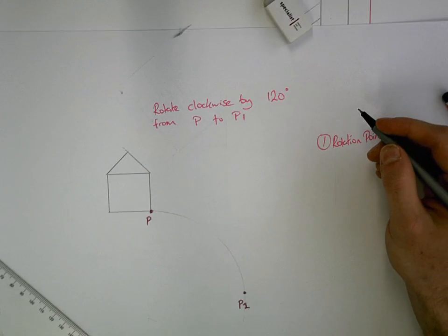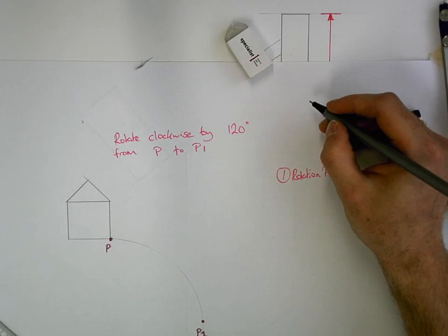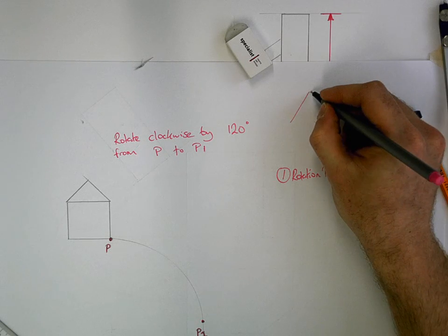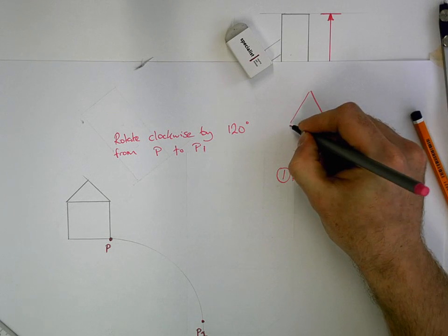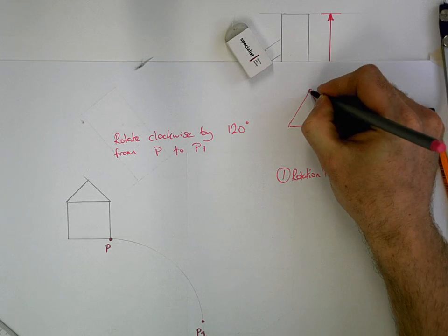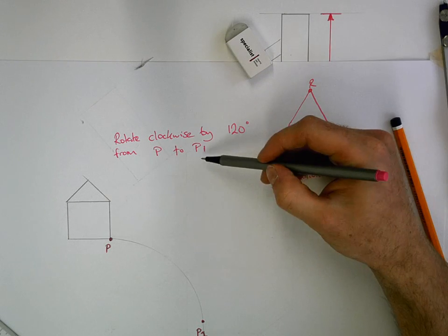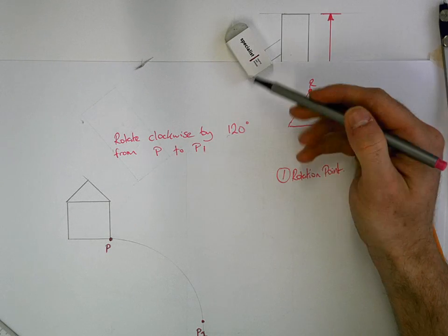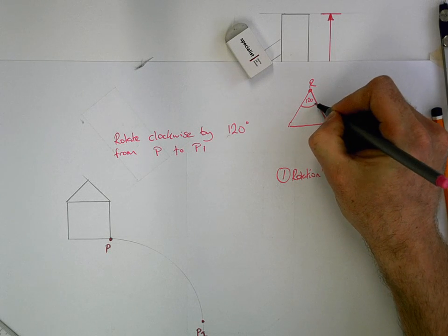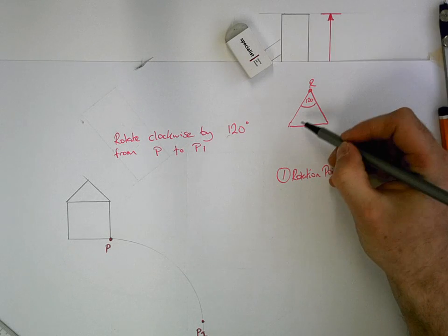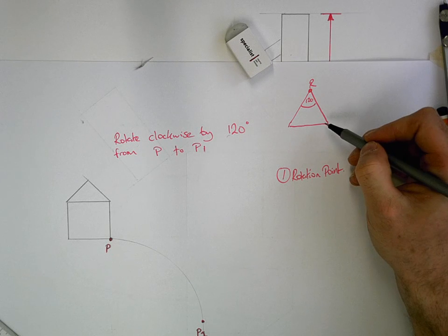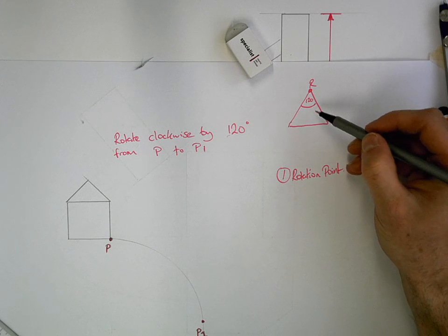The second thing to take into consideration is that we're going to have to create a triangular shape. Okay. The rotation point being the apex of the triangle. Now we're told we're rotating by 120 degrees. So that means that 120 degrees is going to be the angle here. That leaves two angles on the bottom left and bottom right. They're going to be equal.